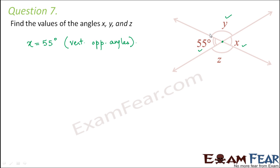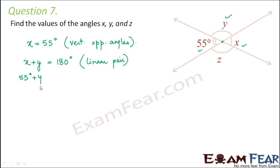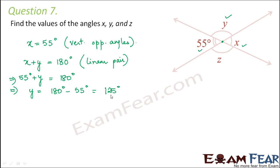Now let's focus on y. If you focus on x and y, you see that x and y form a linear pair — that is, the sum of x and y is equal to 180 degrees. So whether you call it a linear pair or supplementary, it means the same thing here. So x plus y equals 180 degrees. The value of x is 55 degrees, so y equals 180 minus 55, which is 125 degrees.